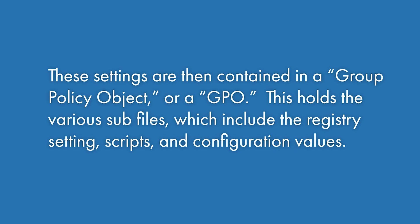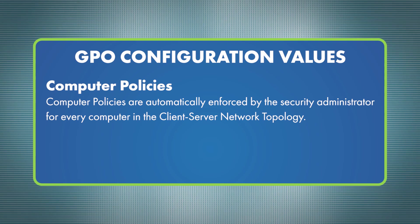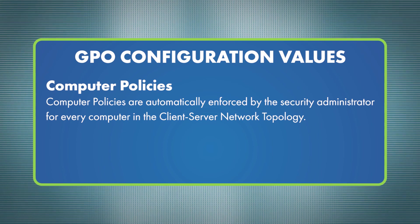The GPO holds various sub-files including registry settings, scripts, and configuration values. Configuration values break down into: one, computer policies — also referred to as machine policies — which are automatically enforced by the security administrator for every computer in the network. They are applied via a script when the computer first boots up, and then applied to each employee that logs in regardless of security profile. This policy set also includes sub-policies called user rights, which define maintenance tasks that require administrative privileges.